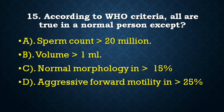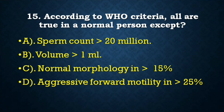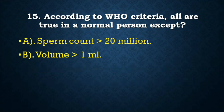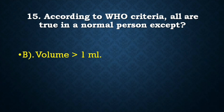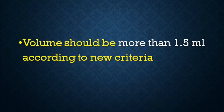Next question: According to WHO criteria, all are true in a normal person EXCEPT — sperm count more than 20 million, volume 1 ml, normal morphology more than 15%, aggressive forward motility more than 25%. Correct answer is volume 1 ml — volume should be more than 1.5 ml according to the new criteria.